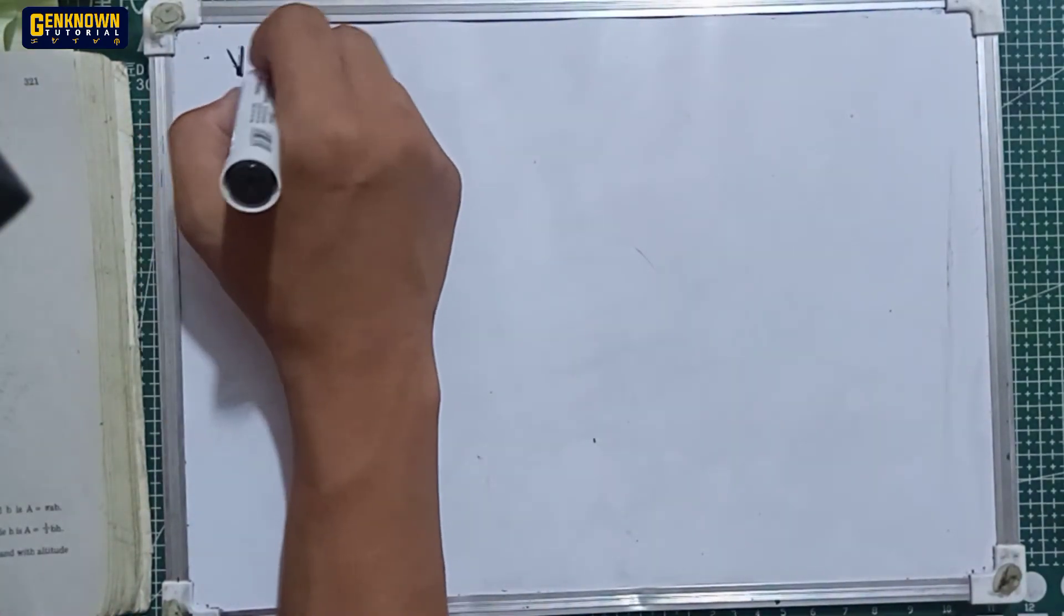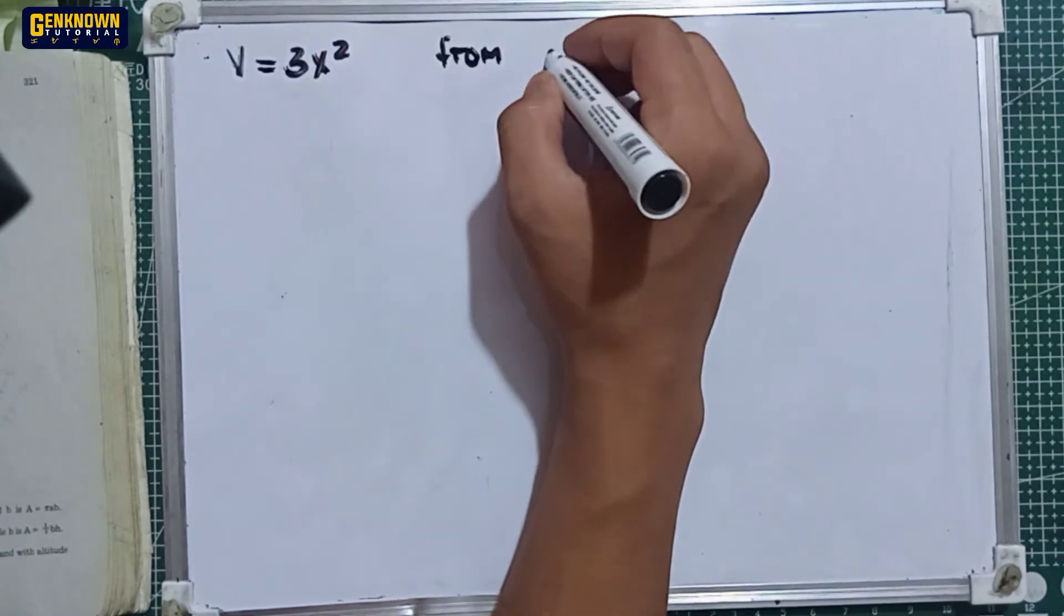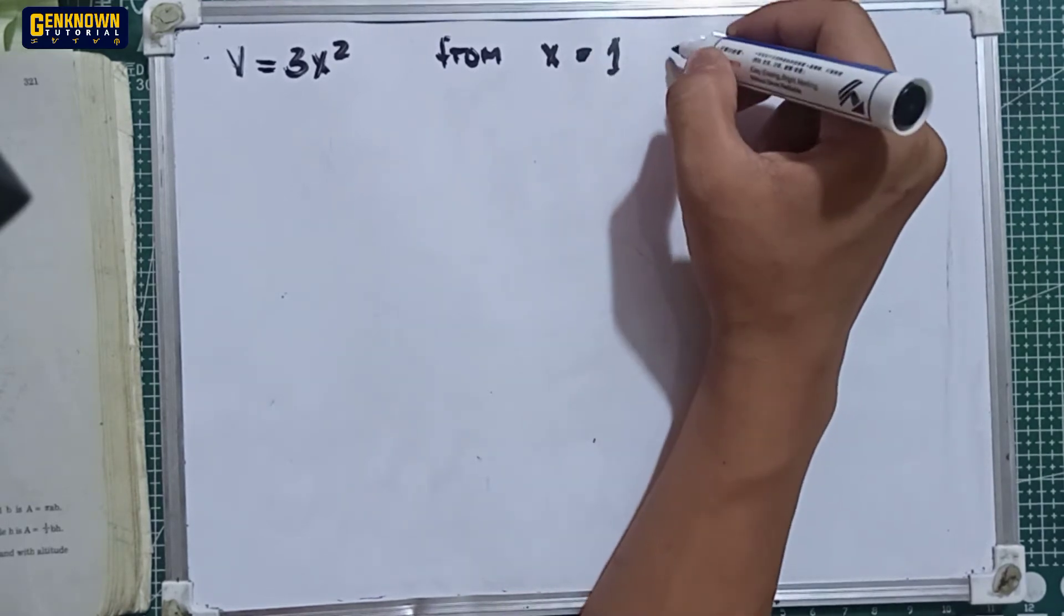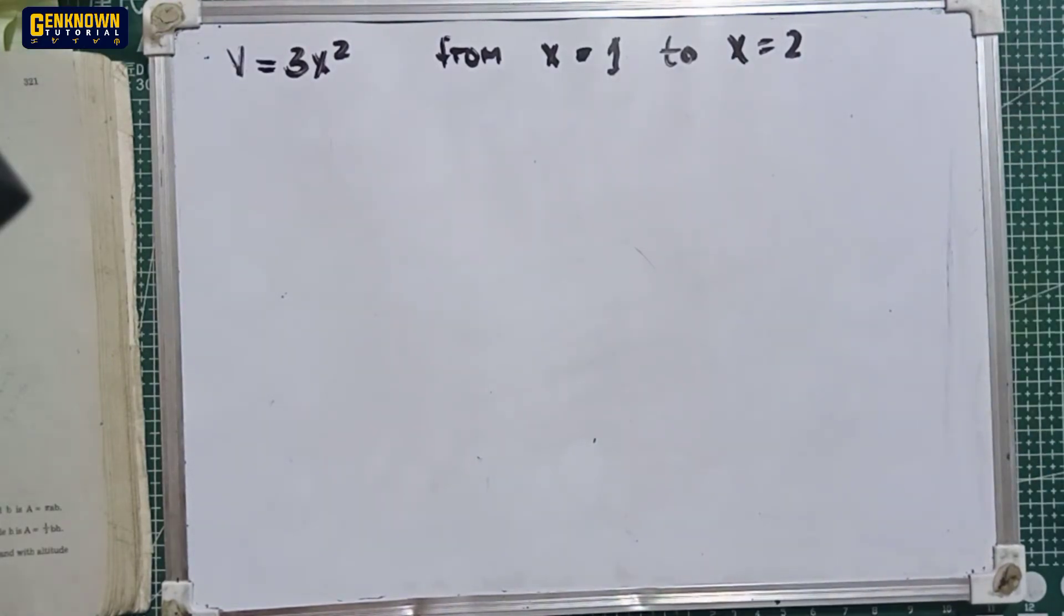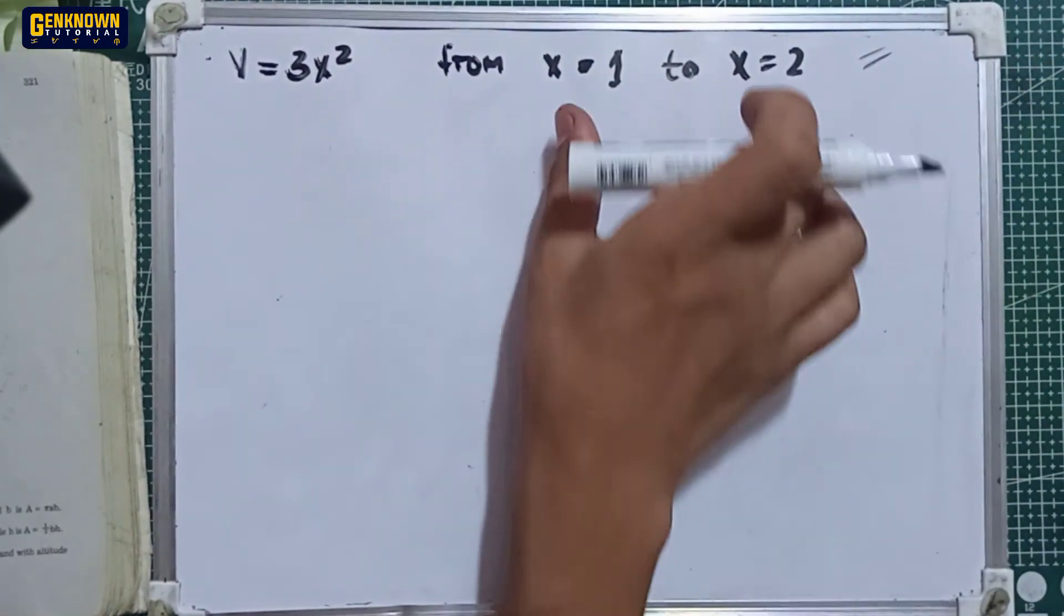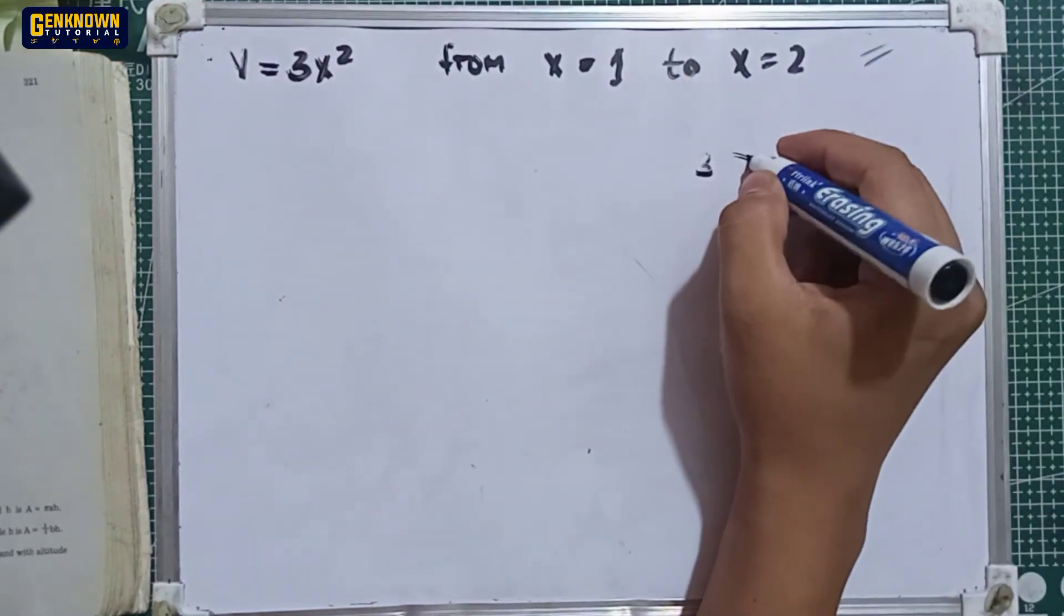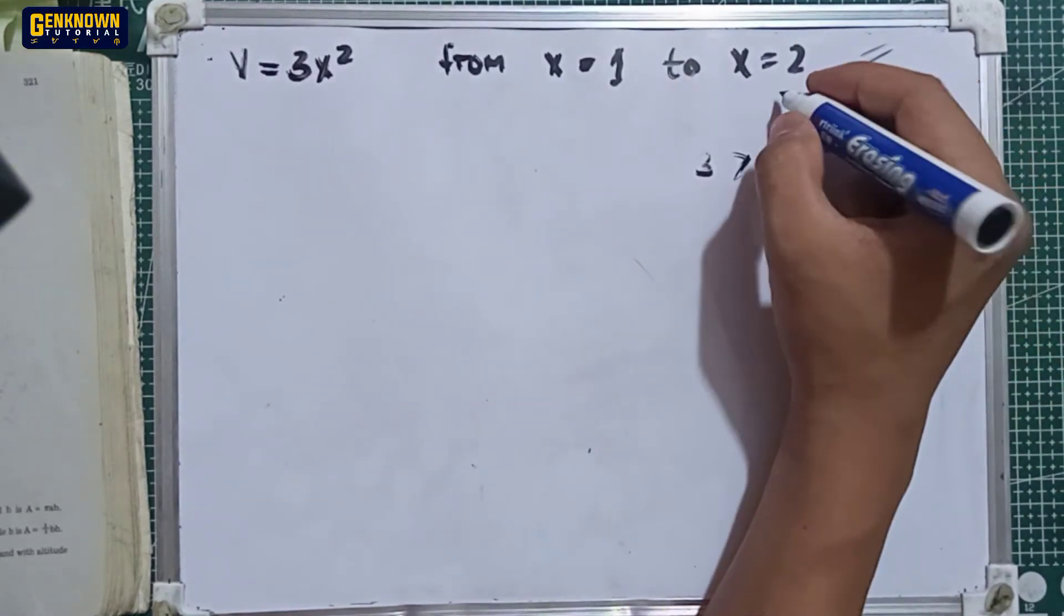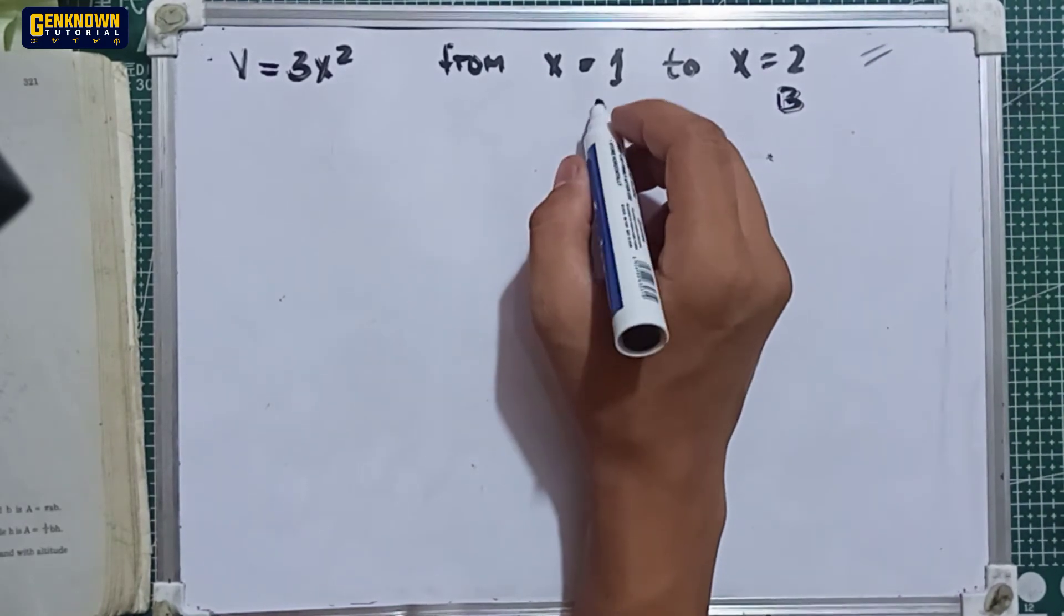Number 1: y is equal to 3x squared from x is equal to 1 to x is equal to 2. So this is the limits. Based on these two value of constants, we can easily identify b, the upper limit, and the lower limit. Remember that b is greater than a. So 2 is greater than 1. To be specific, the constant 2 is the b and the constant 1 is the a.